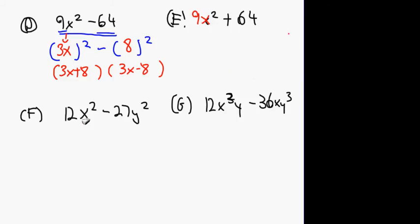Alright guys, what about the next part? 12x squared minus 27y squared. Any ideas there? Look at these two numbers here. Take out a number that will divide into both. Okay, number 3, okay? Number 3 will go in.